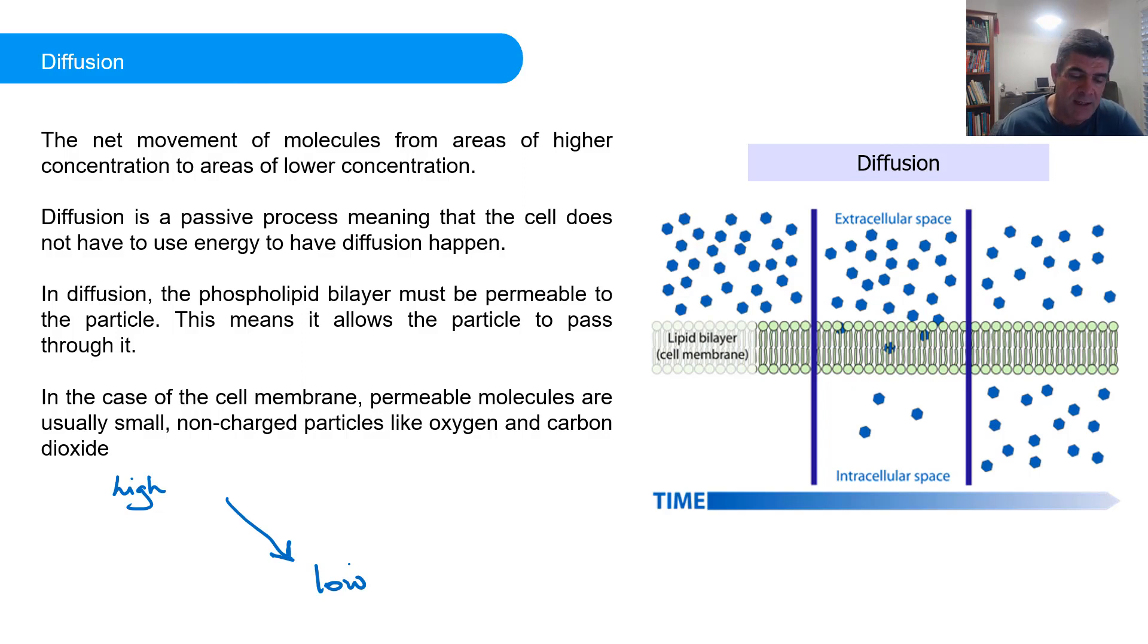The important thing about diffusion is that we have now looked at the structure of the cell membrane and we know that it is a semi-permeable membrane. That is, it allows some particles to pass through it but not others. And that means where the particles are small enough to actually pass through the membrane, all we need is a differential or a gradient. If there is a gradient,